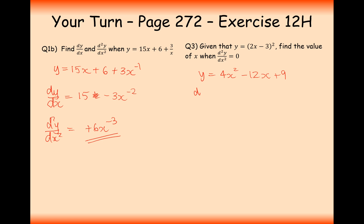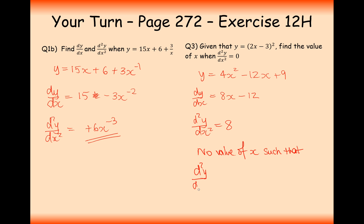Differentiating gives dy by dx equals 8x minus 12, then differentiate again. The second derivative equals 8. That's unusual — usually we'd have a place to substitute x, but here the second derivative always equals 8. So there is no value of x such that the second derivative equals 0.